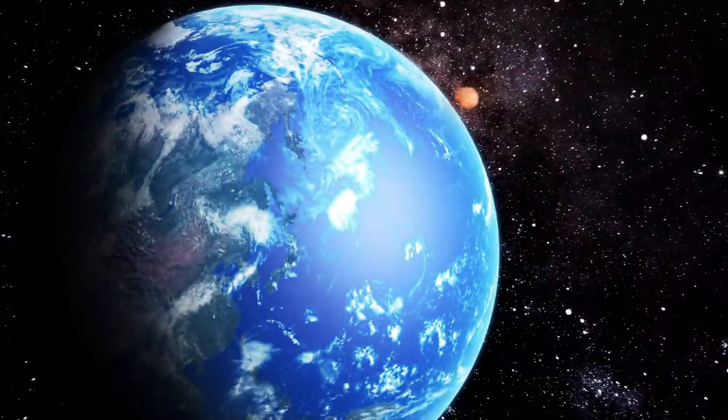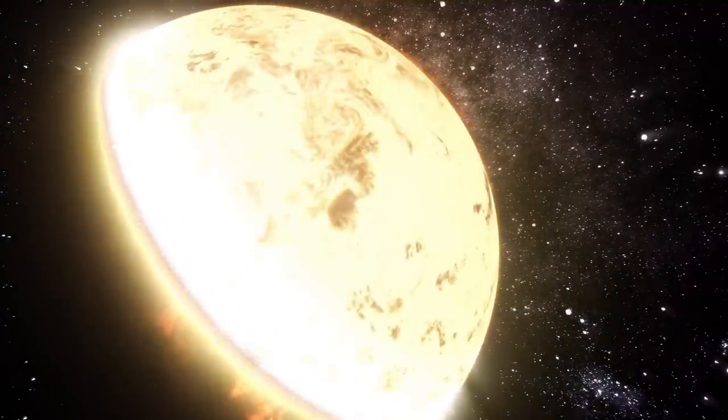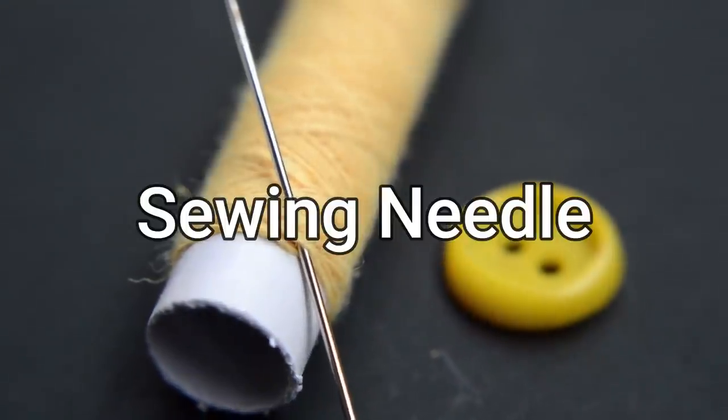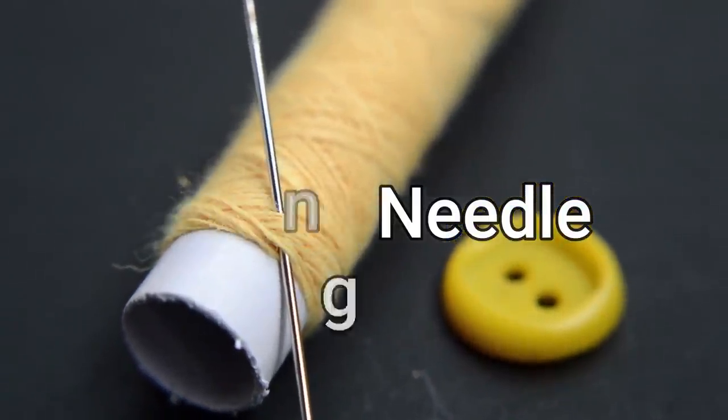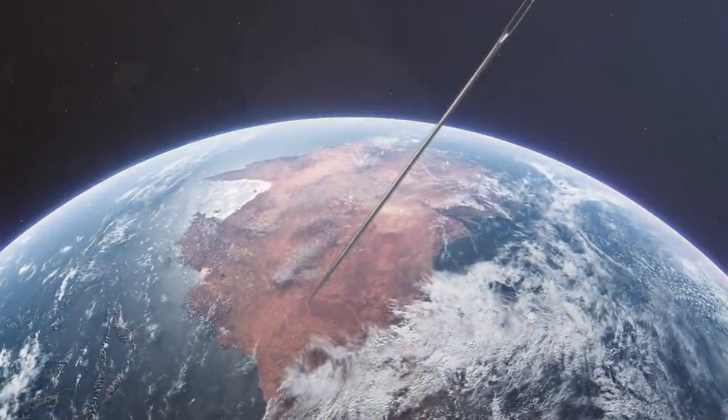But in this video, instead of talking about large asteroids and comets, let's talk about something small, a sewing needle. What do you think will happen if it flies across space at the speed of light before colliding with our planet?